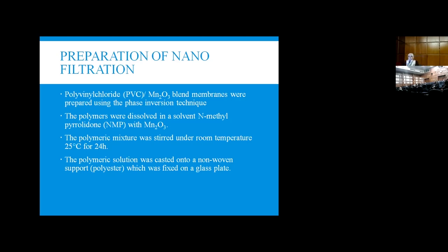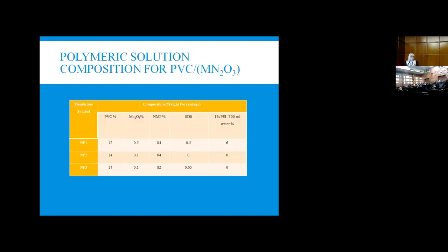This shows the percent of the membrane: NF1 has 1% PVC, NF2 has 10% PVC, and NF3 has 20% PVC with the addition of SDS in NF2 and NF3.